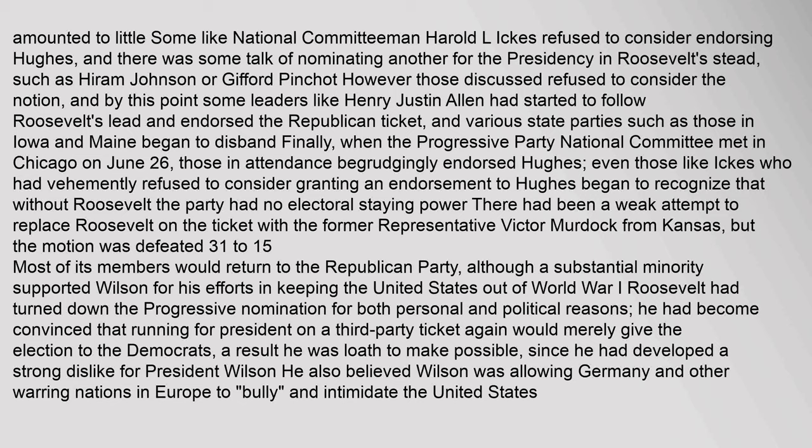Leaders like Henry Justin Allen followed Roosevelt's lead and endorsed the Republican ticket. When the Progressive Party National Committee met in Chicago on June 26, those in attendance begrudgingly endorsed Hughes. An attempt to replace Roosevelt with Victor Murdoch from Kansas was defeated 31 to 15. Most members returned to the Republican Party, though a substantial minority supported Wilson for keeping the United States out of World War I. Roosevelt had declined for both personal and political reasons — he believed running on a third-party ticket again would give the election to the Democrats, whom he disliked, and felt Wilson was allowing Germany to bully the United States.